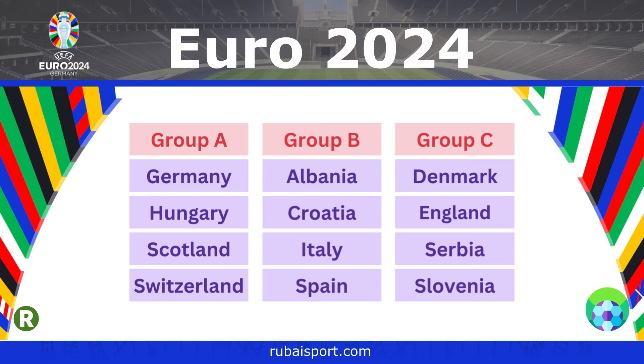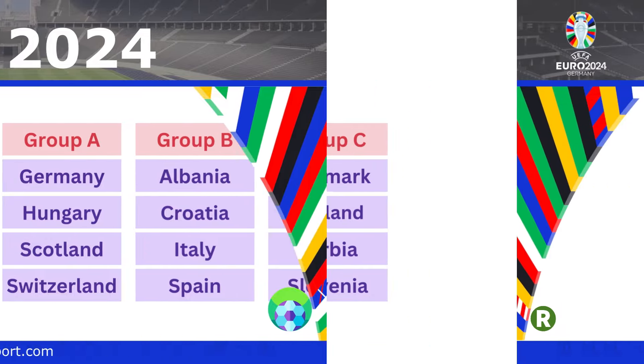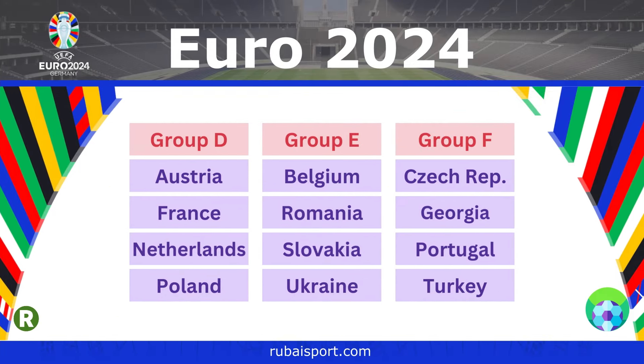Group C: Denmark, England, Serbia and Slovenia. Group D: Austria, France, Netherlands and Poland. Group E: Belgium, Romania, Slovakia and Ukraine.